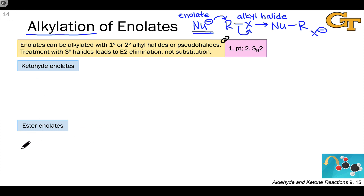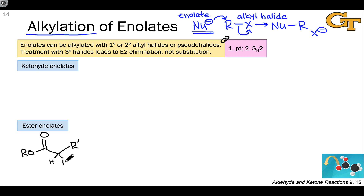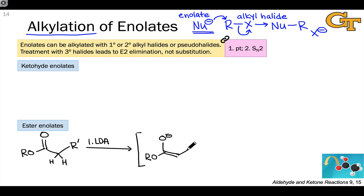Let's look at ester enolates first, because here the process is relatively more straightforward. In an ester enolate, we only have one alpha carbon. I'm going to call the two R groups in the ester RO — the alkoxy group — and R' for the alkyl group, with an alpha carbon bearing two hydrogens. To alkylate an ester enolate once, all we need to do is use one equivalent of LDA. This generates the ester enolate intermediate, drawn in its most important resonance form. Treatment with a primary or secondary alkyl halide or pseudohalide then leads to alkylation.